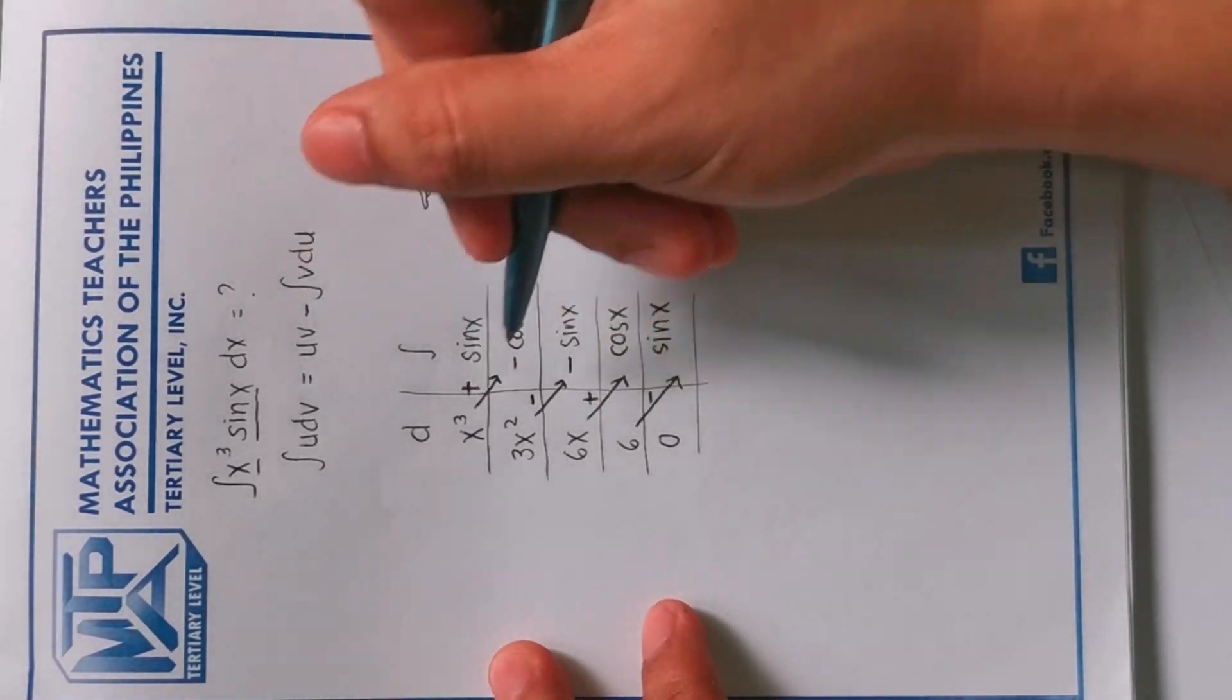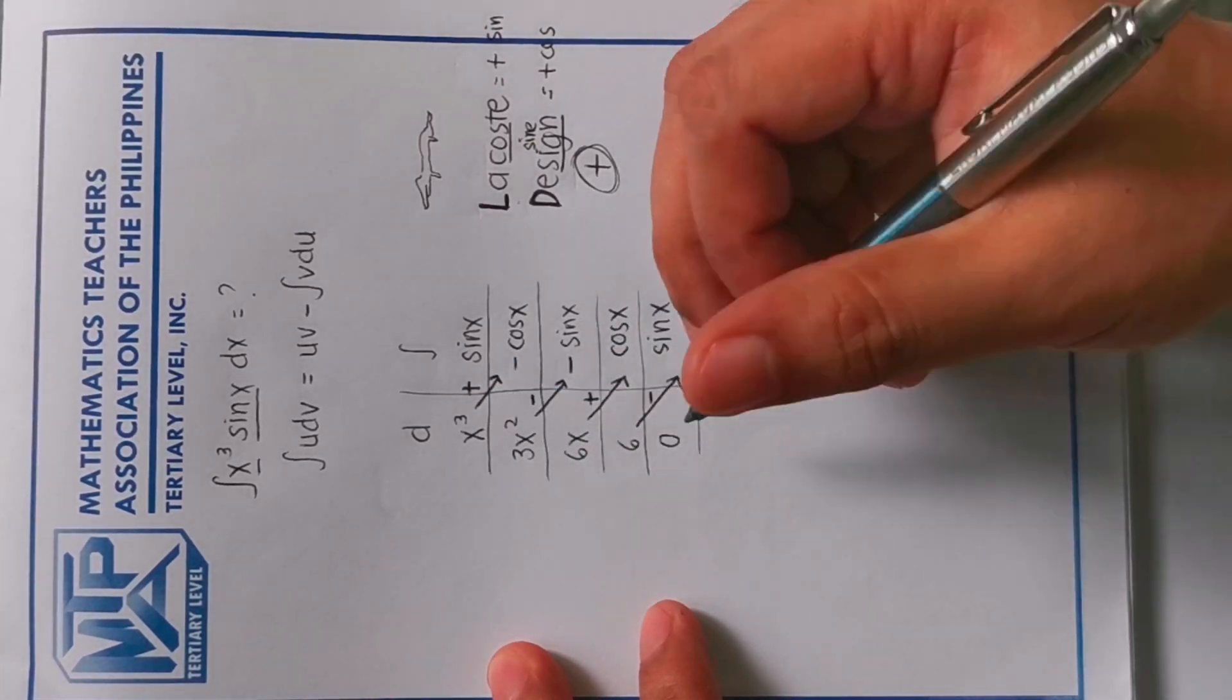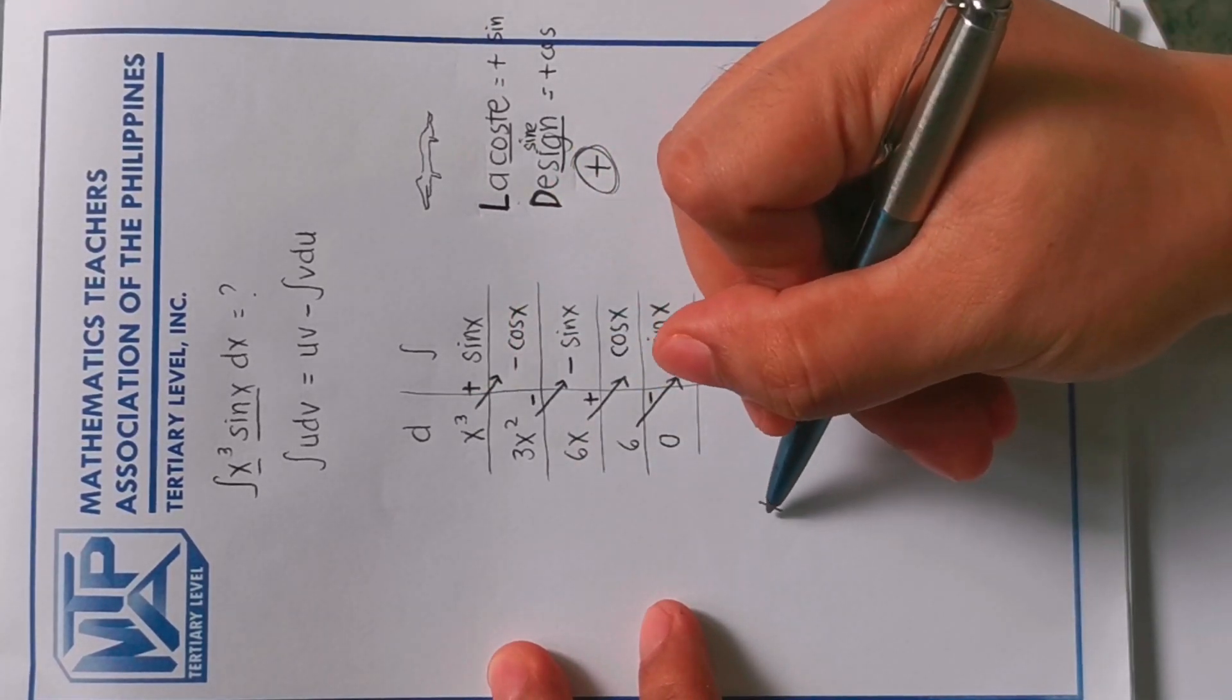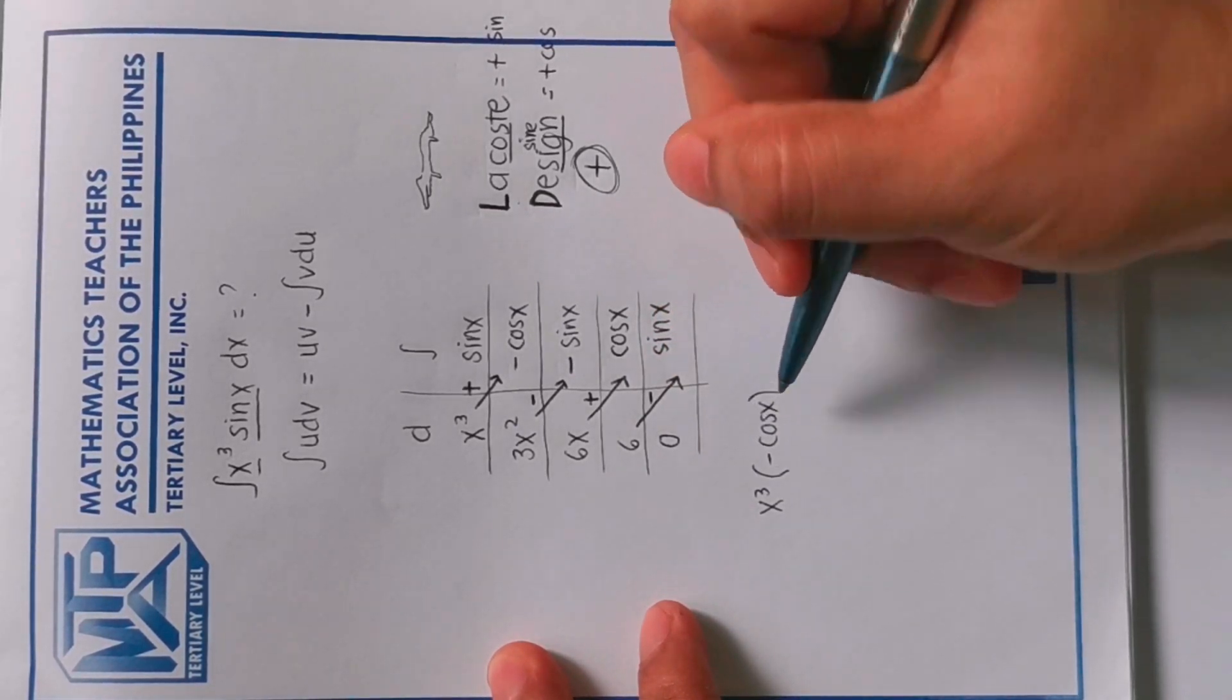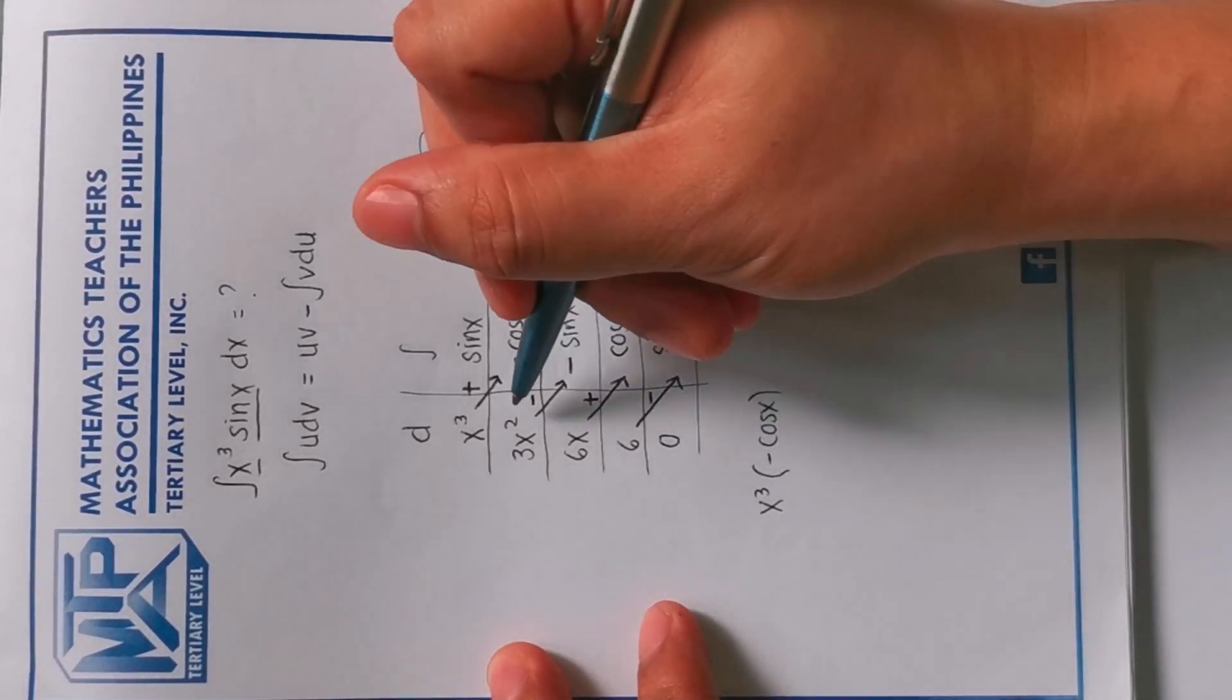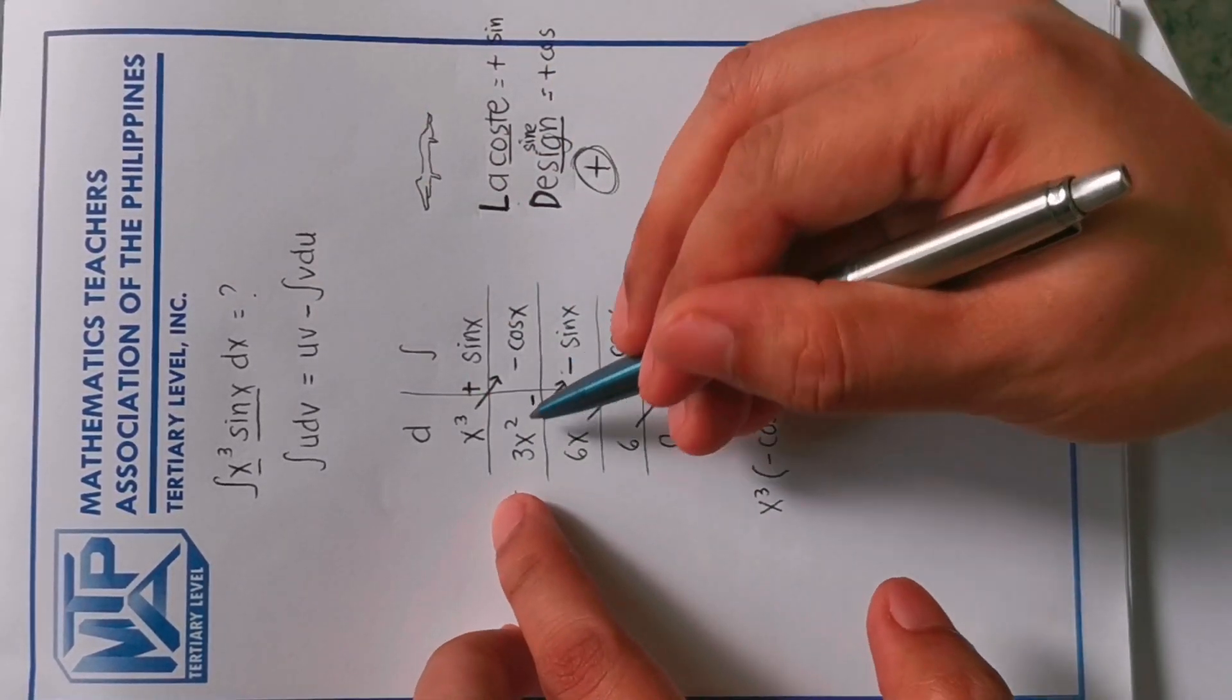So we will copy the terms. So the arrow means multiply the term. So first term is x cubed multiplied by negative cosine x. Then add the terms, then multiply them. So we have 3x squared, so negative and negative, this will become positive sine x.